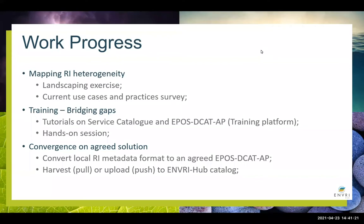What have we managed to achieve? We've mapped the heterogeneity across all the RIs in Envry, which is extreme to say the least. This is a landscaping exercise and we have a map of all the current use cases and the practice survey. We've been doing training, bridging the gaps — a tutorial on how to build a service catalogue, because some RIs had only a dataset catalogue, and also on how to use EPOS DCAT-AP, which is an extended application profile of DCAT used within the EPOS RI. We've organised hands-on sessions to help people translate from their existing metadata standards to EPOS DCAT-AP, as we've already done for 17 different metadata standards within the EPOS Solid Earth domain.